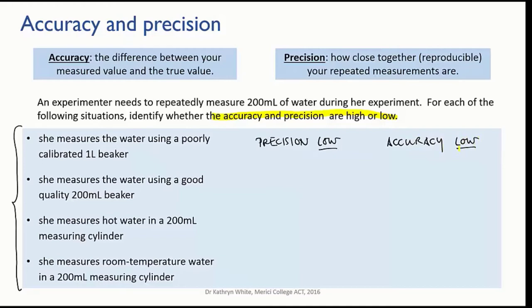In the second situation, things have improved a bit. She's using at least a good quality piece of glassware, so we hope that it's well calibrated, and it's closer to the volume that she wants to measure. This makes it more likely that the 200 mil mark actually represents 200 mils.